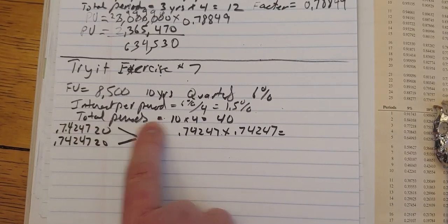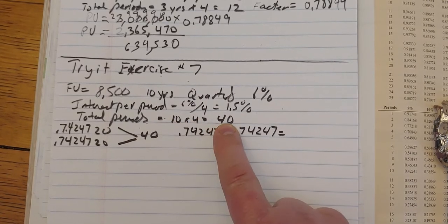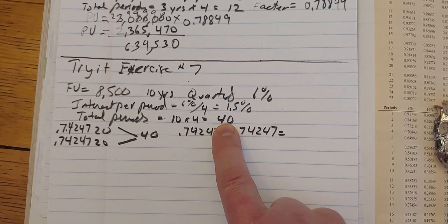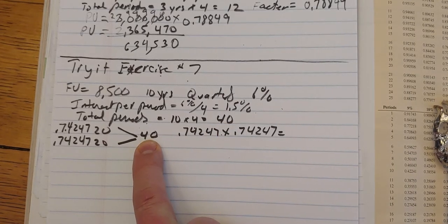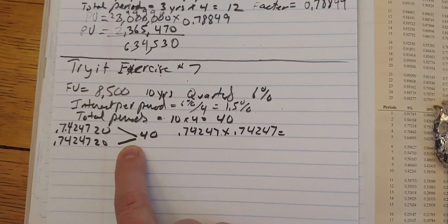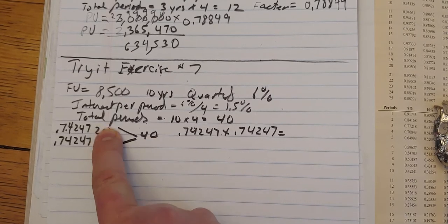Now we know the total periods is 10 years times four, if it's quarterly, so that's 40 periods. That's well beyond the 25. So we know that we need 40 periods. And if we divide that by two, that's 20.